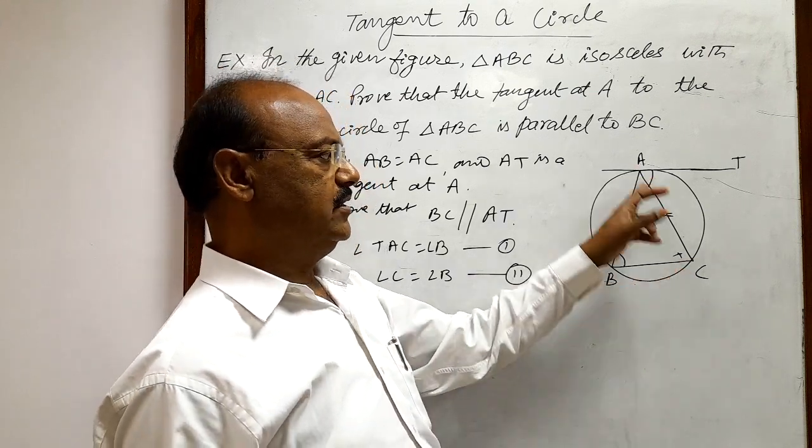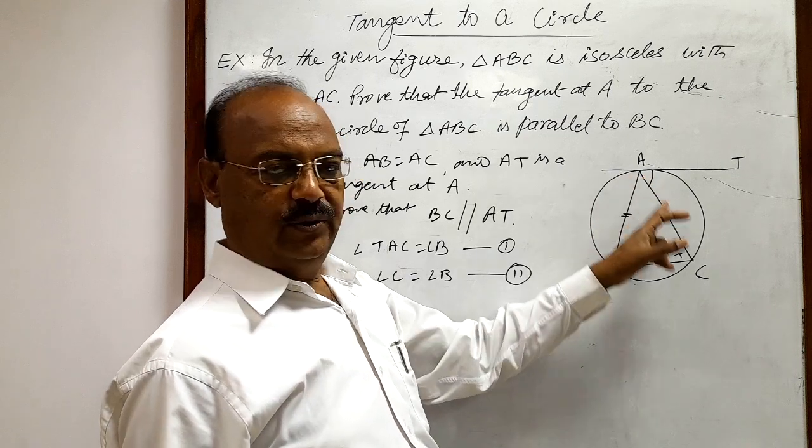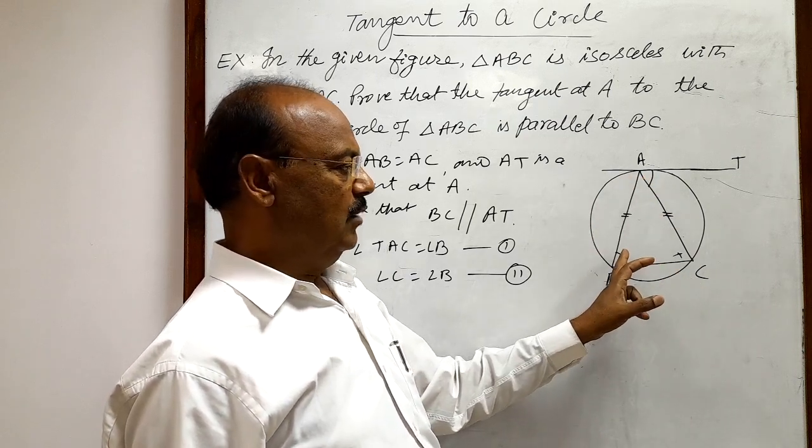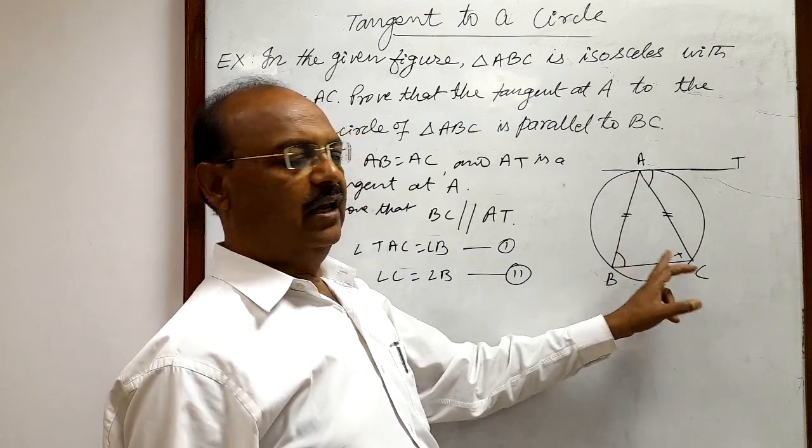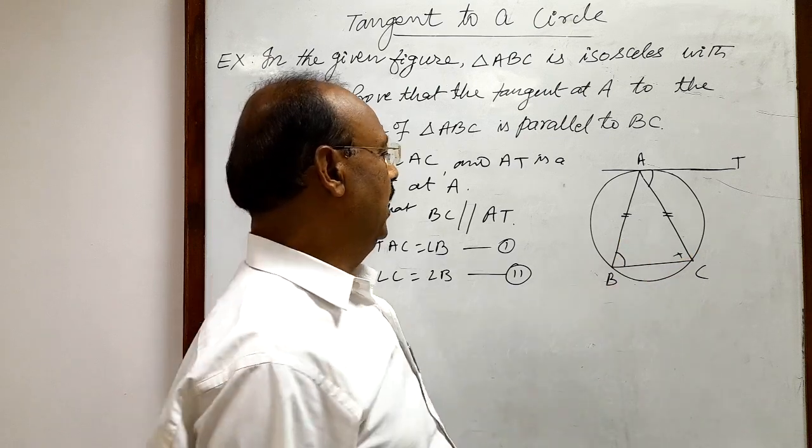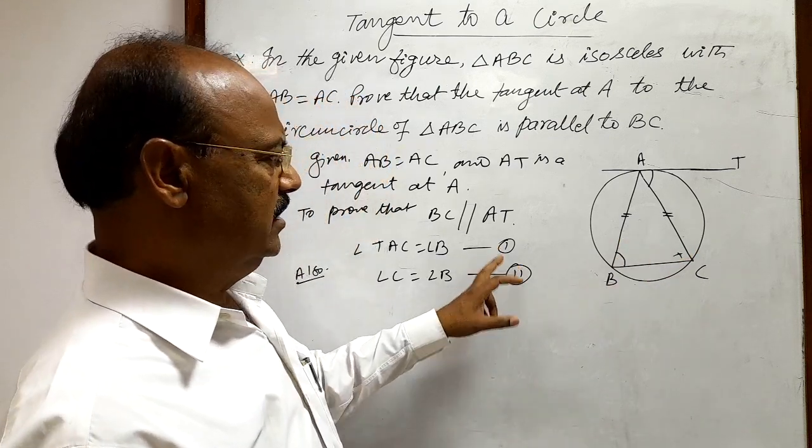Since the triangle is isosceles, sides AB equal to AC, so angles opposite to equal sides in a triangle are equal. Correct. And by these two relations,